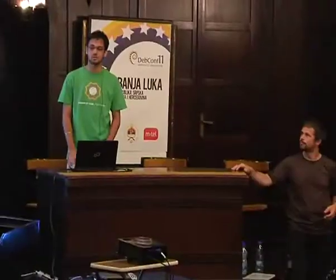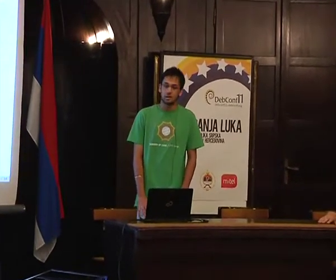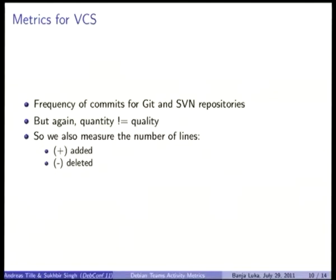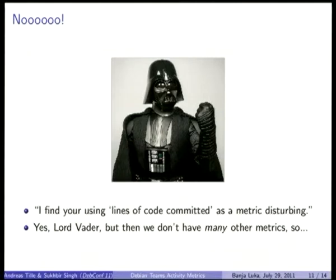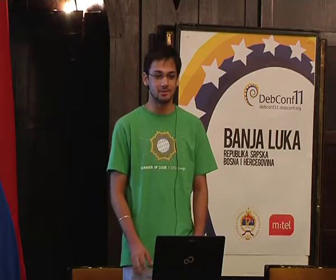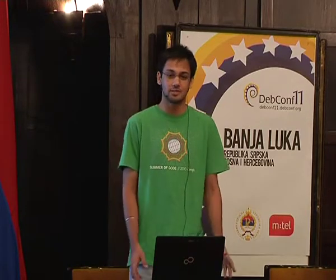Now we come to VCS commits. We've started including VCS commits because we don't have many metrics — we just have to make use of the ones we already have. Quantity is not equal to quality, so we also measure the number of lines added and removed. But lines of code is hardly a good metric — for instance, if you commit a binary or image file in a Git repository, it will show 500 lines committed. It's a poor metric, we know, but these are the only metrics we can measure.